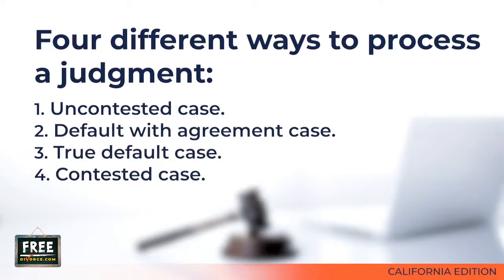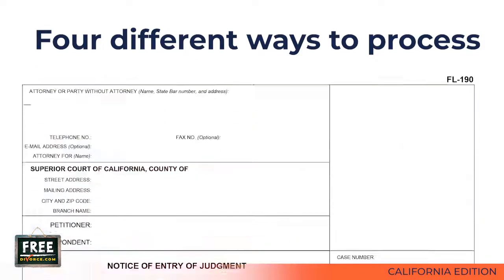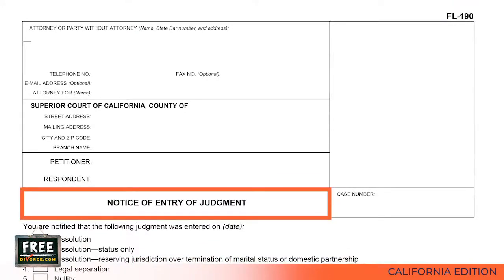A lot of the additional court forms you will need to submit with your divorce judgment are going to be the same, regardless of whether it's an uncontested case, a default with an agreement case, a true default case, or a contested case. For example, no matter what type of case you have, you are going to need to submit a form called Notice of Entry of Judgment, which is FL-190. You will fill out this form the same regardless of what type of case you have. We will discuss the FL-190 in the next video.